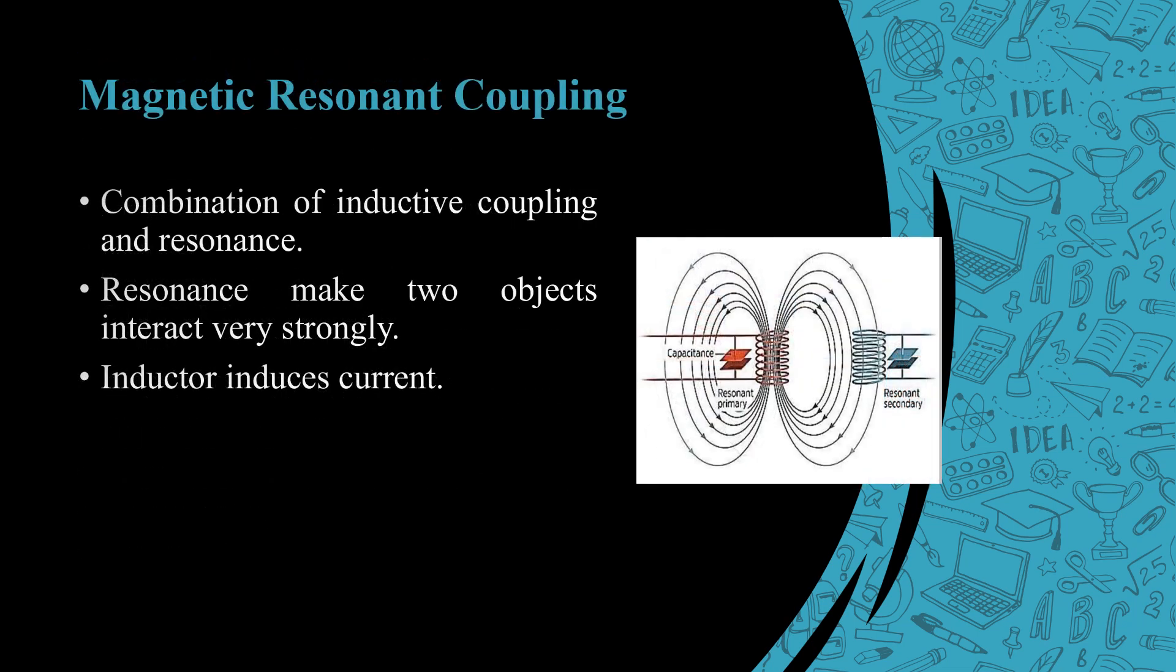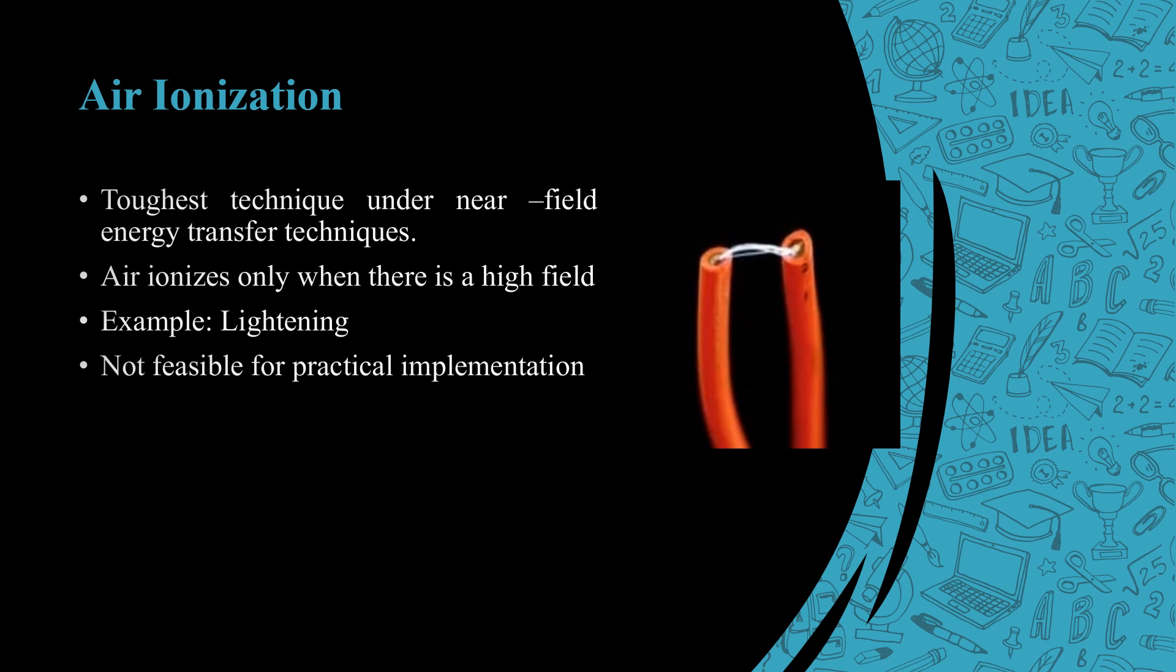Resonant inductive coupling is a combination of inductive coupling and resonance. Resonance makes two objects interact very strongly. Inductor induces current. Air ionization is another technique under near field energy transfer. Air ionization only works when there is a high electric field, example lightning. Not feasible for practical implementation.